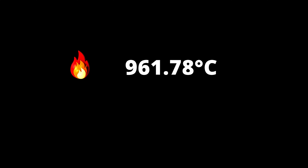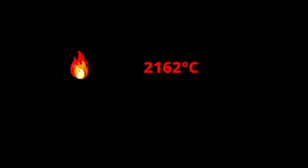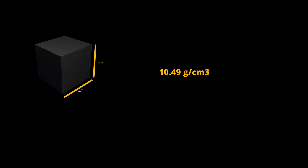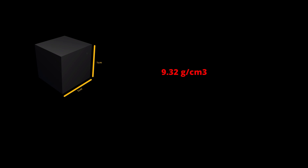Silver has a melting point of 961.78 degrees Celsius and a boiling point of 2,162 degrees Celsius. At room temperature, silver has a density of 10.49 grams per cubic centimeter, and 9.32 grams per cubic centimeter when liquid at its melting point.